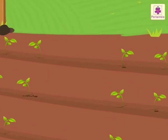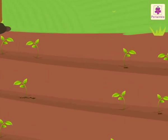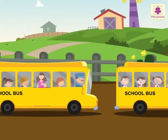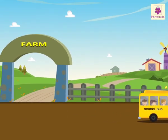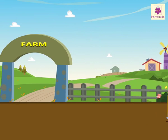So the distance between the two plantations is 7 meters 85 centimeters. Wow, it was so much fun learning conversion while planting the saplings!